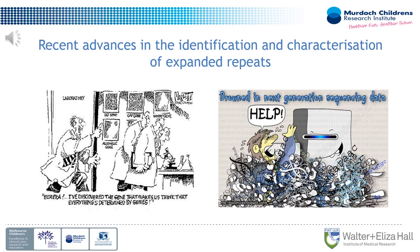Hello everyone and welcome to this educational session on repeat expansions. I'm very grateful to the organising committee for the opportunity to talk about some exciting advances in the field of expanded repeat disorders. My name is Paul Lockhart and I am group leader of Neurogenetics at the Murdoch Children's Research Institute in Melbourne, Australia. My background is Neurogenetics, encompassing both gene discovery and functional biology, and I have no conflicts of interest or disclosures to declare in relation to this work.